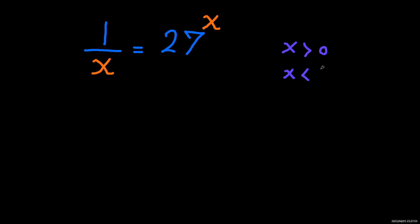Okay, so how to actually solve this equation? It's actually simpler than what you think. To both sides, I'm going to raise to the power of 1 over X. So we'll have (1/x) to the power of (1/x) equals (27^x) to the power of (1/x).